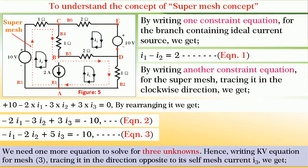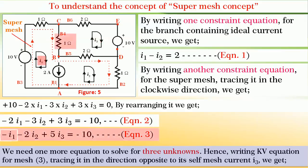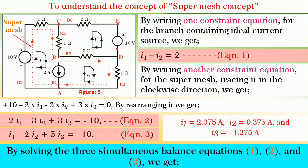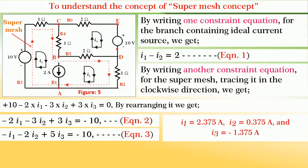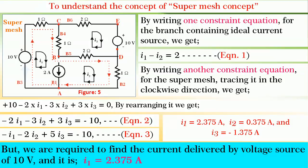We need one more equation to solve for three unknowns. By writing Kirchhoff's voltage equation for mesh 3, tracing it in the direction opposite to its self mesh current I3, we get minus I1 minus 2I2 plus 5I3 equals minus 10 — let it be equation 3. By solving these three simultaneous equations, we get I1 equals 2.375 amperes, I2 equals 0.375 amperes and I3 equals minus 1.375 amperes. The current delivered by the voltage source of 10 volts is I1, which equals 2.375 amperes.